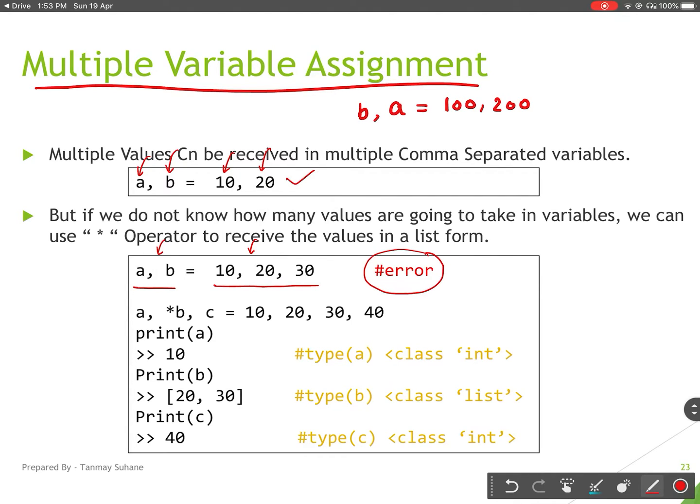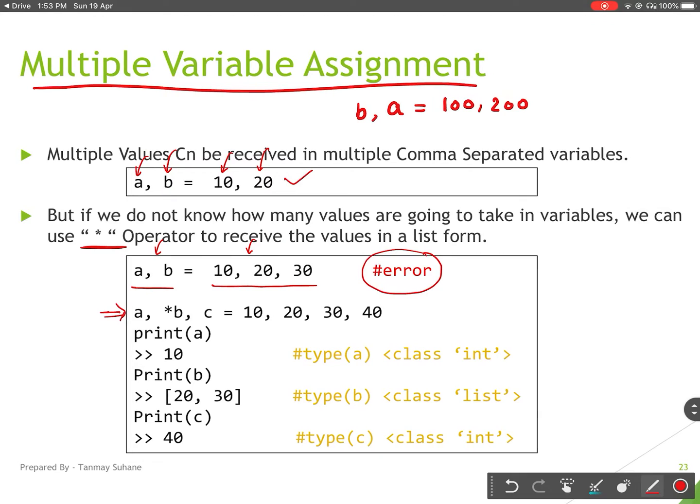To handle those cases we can use star operator with variables. This star operator can take any number of values as a list. You can see this line here: I am taking four values and I have given three variables.